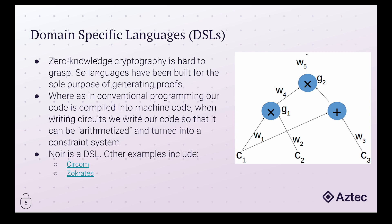When we compile DSL code, it's put through a process called arithmetization, which turns the code into a constraint system. The makeup of this constraint system differs by proving scheme, but a good way of thinking about it is converting a program into a series of inputs and outputs going through different arithmetic gates. For example, Gate 1 takes Input 1 and Input 2, multiplies them together, and the output is their product. The constraint system confirms that the inputs going into a gate equal the output coming out, and once this is repeated across all gates, the constraint system is considered valid.